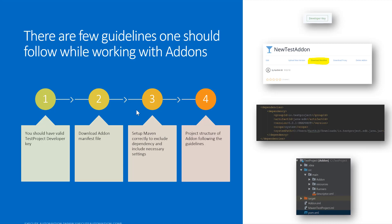You also need to download the manifest file for the add-on you're creating. As you can see on the right-hand side, once you create a new test add-on it will give you options like upload new versions, download manifest, download proxy, and delete add-ons. You download the manifest from there and include it within your resources folder. You also need to set up Maven correctly to exclude dependencies and include necessary settings, as Maven configuration is very important for compiling and creating the JAR file to upload as an add-on.